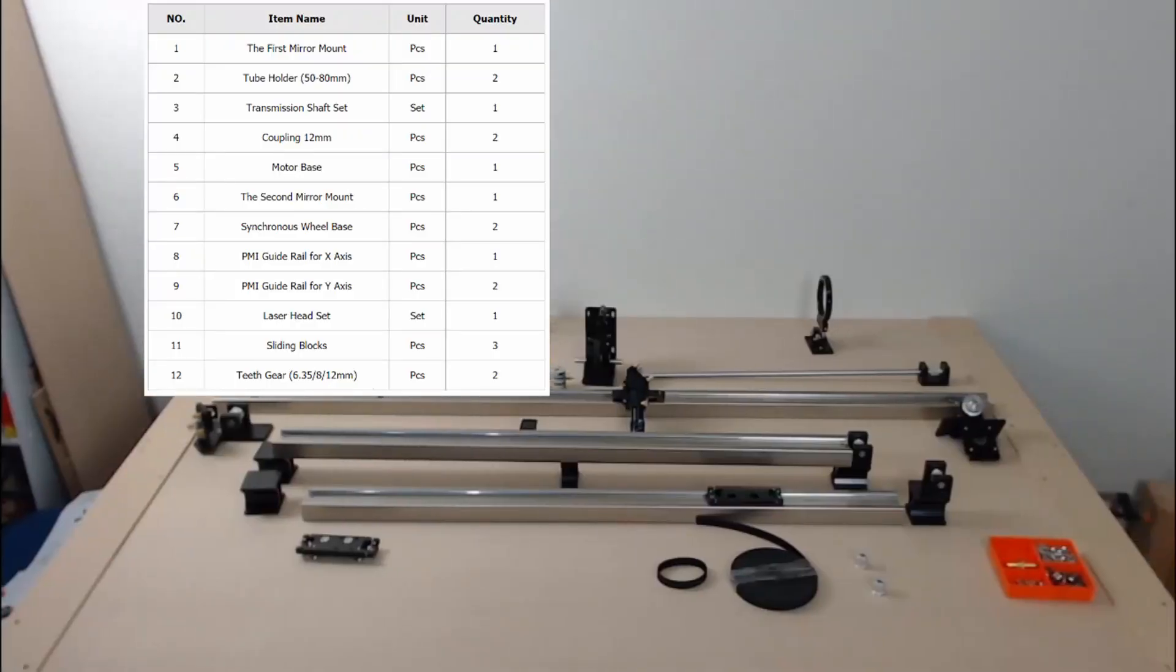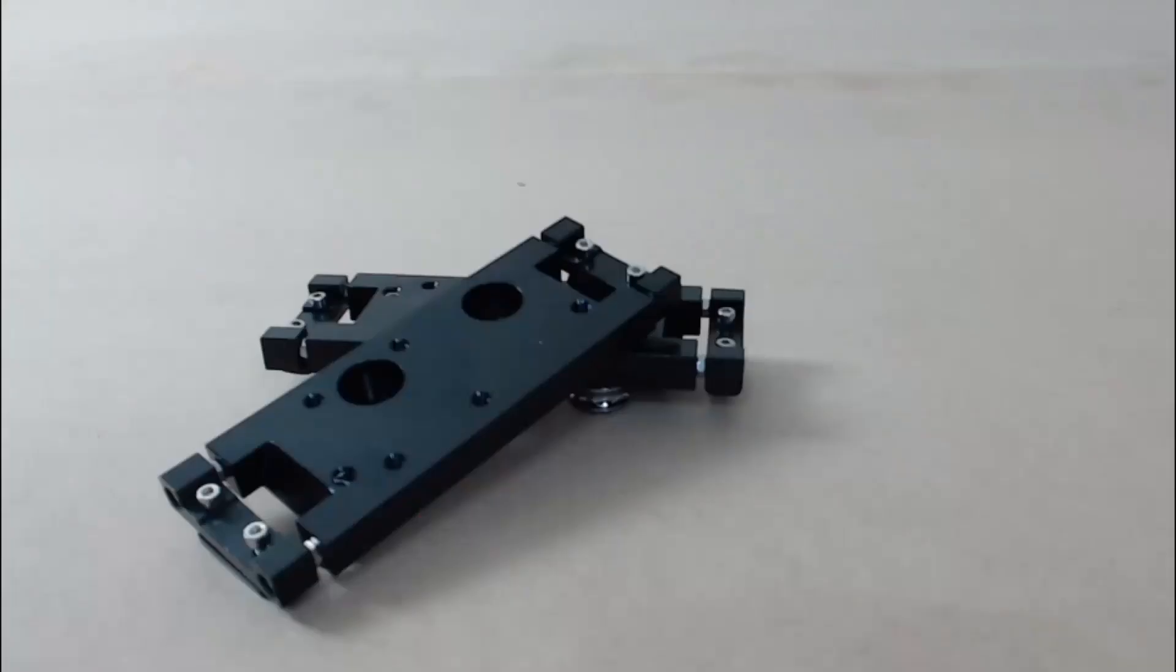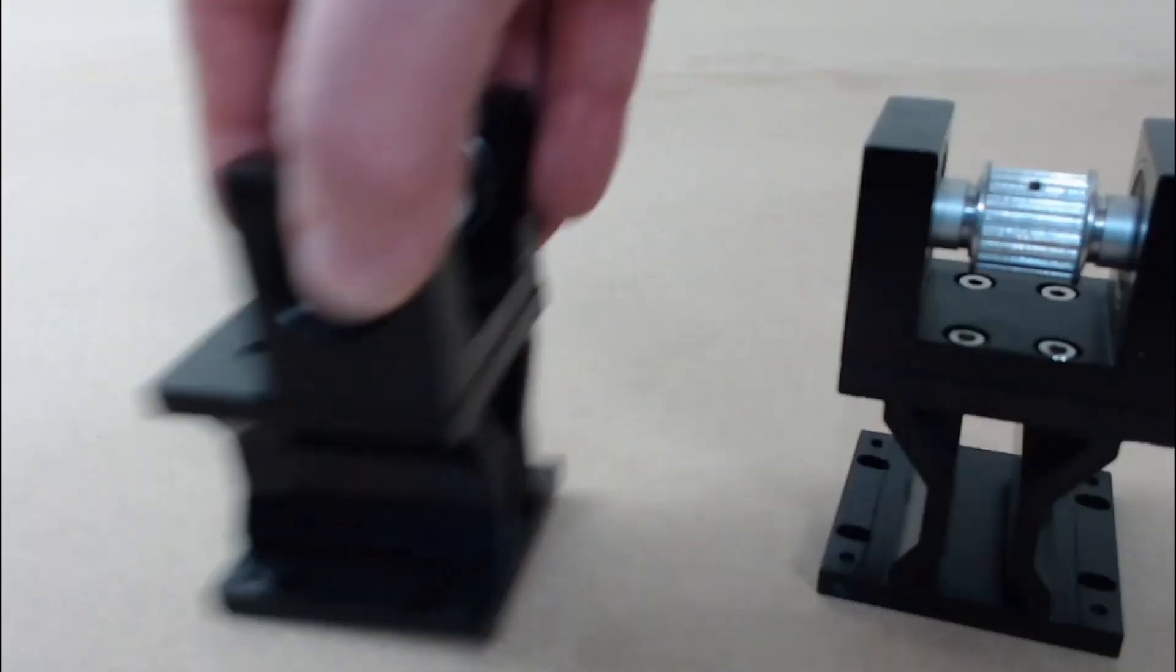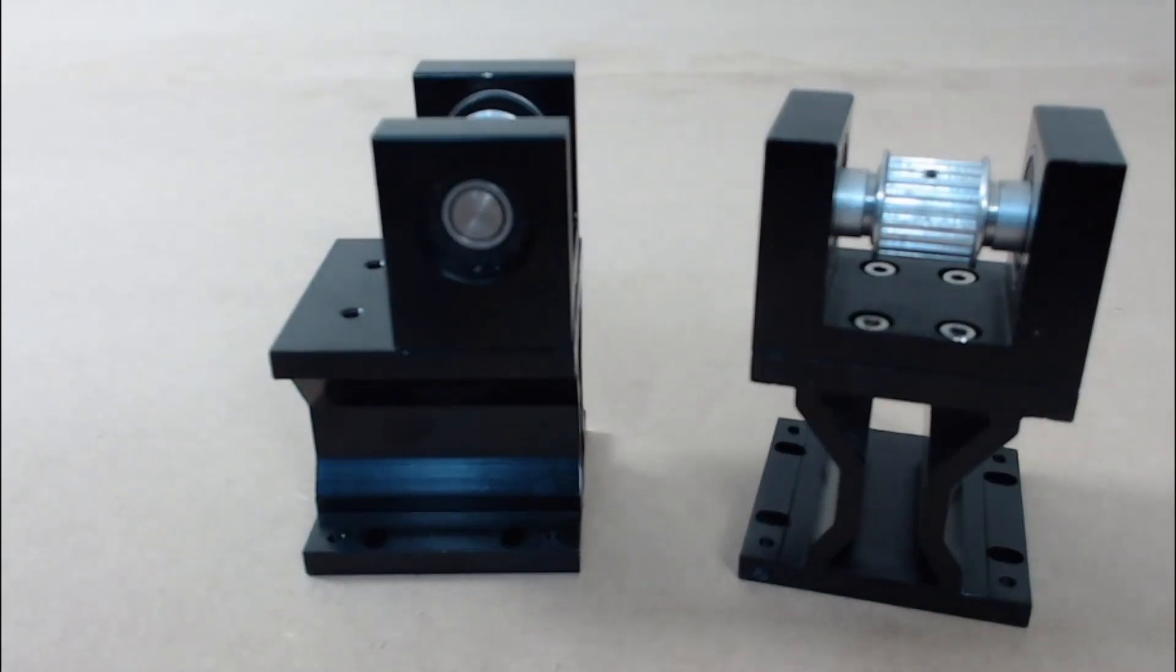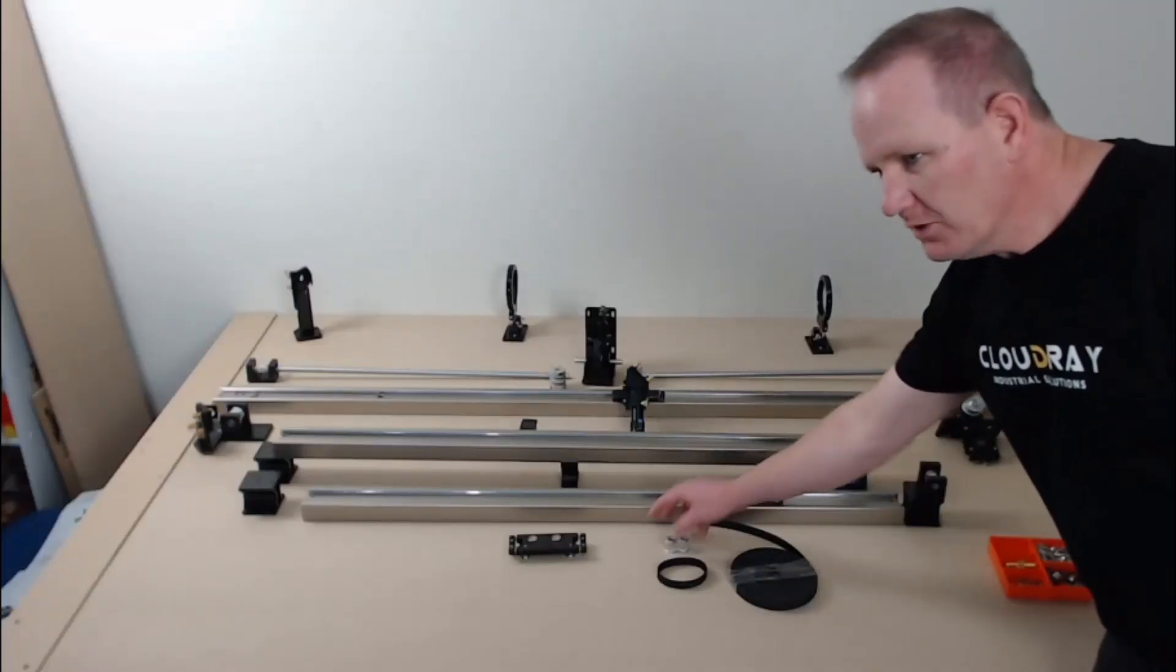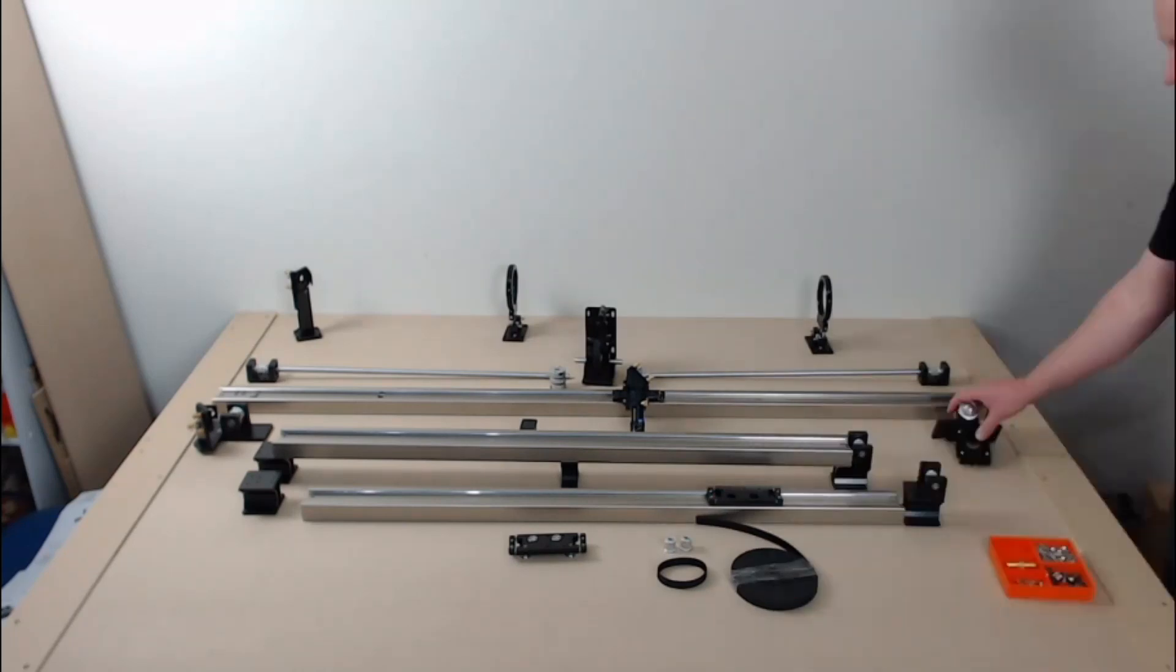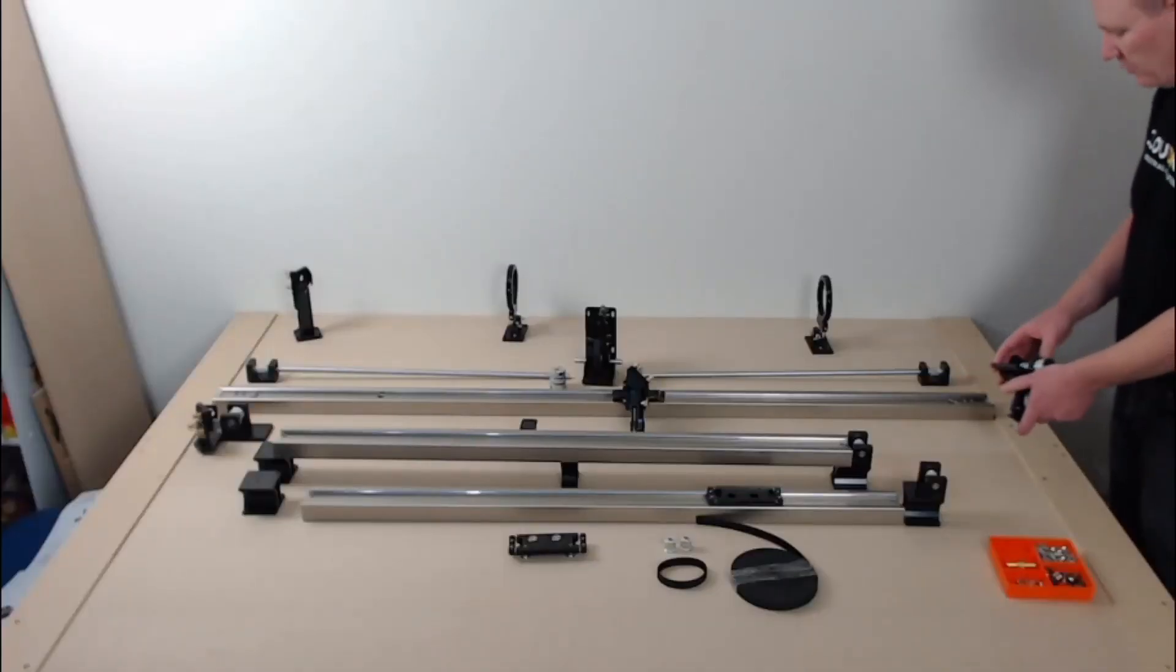So let's have a look at the components of the internal sliding rails. So we have the two y axis rails, one x axis rail here at the back, two carriage blocks, y rail stands. These stands on this end have the synchronous gear included as part of the mount. We have a few extra synchronous gears, some belt.